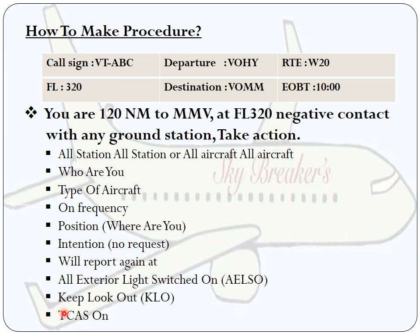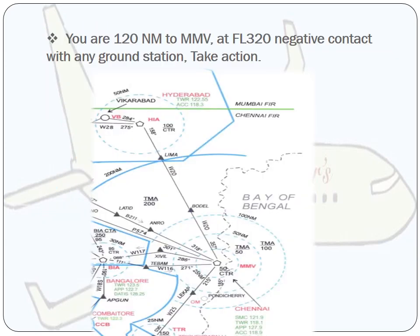There are three things very important in these questions when you have negative contact with any ground station: all exterior lights switched on, so that aircraft flying in the vicinity can see you; keep a lookout; and TCAS — traffic collision avoidance system — on. To communicate, you should know the position of the aircraft.